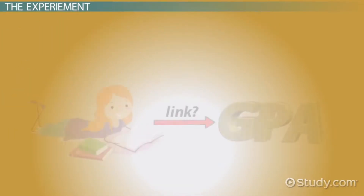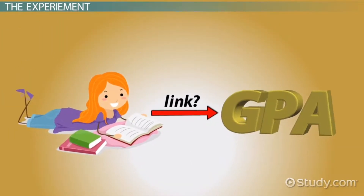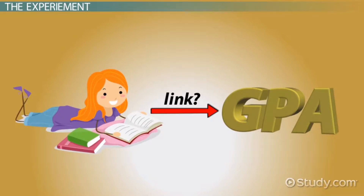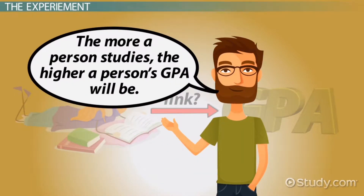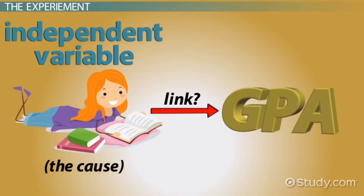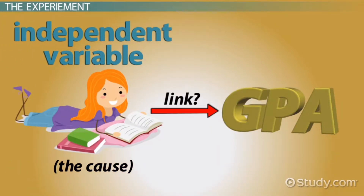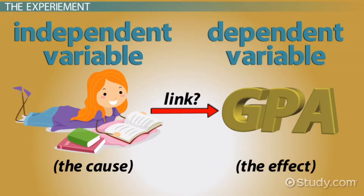For example, let's say we wanted to examine whether studying affects a person's GPA. Our hypothesis might be: the more a person studies, the higher a person's GPA will be. In this example, studying would be the independent variable — the cause — while a person's GPA would be the dependent variable — the effect.